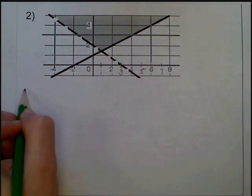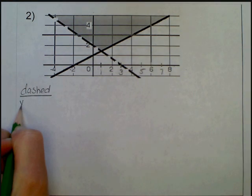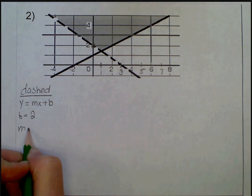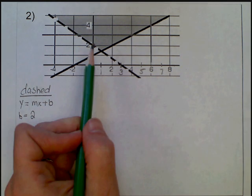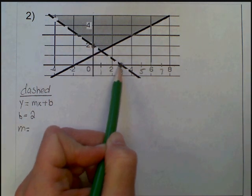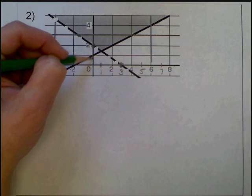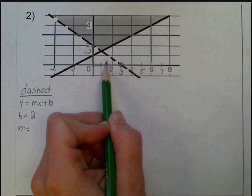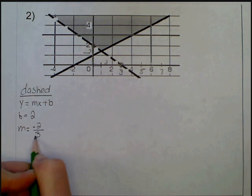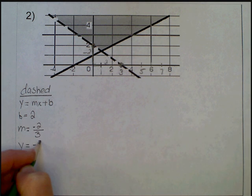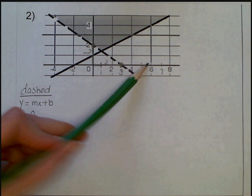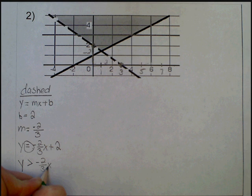I'll start with the dashed line. Both lines have visible y-intercepts, so I'll use y equals mx plus b. For the dashed line, my y-intercept is 2, so b equals 2. Finding another point on the line, I see the point (0, 3) — wait, using the slope triangle I fall 2, which is negative 2, and run 3 to the right, giving a slope of negative 2 over 3. The equation is y equals negative two-thirds x plus 2. It's dashed and shaded above, so y is greater than negative two-thirds x plus 2.